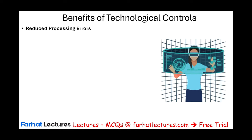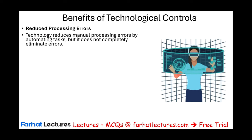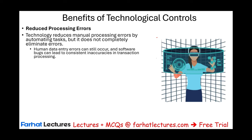The benefits of technological controls: first, it reduces processing errors. Technology reduces manual processing errors by automating tasks. For example, computing sales tax at 6% — the computer will always apply 6% to every sale, so it will never say 6.2% or 5%. Once it's programmed correctly, it's programmed properly.